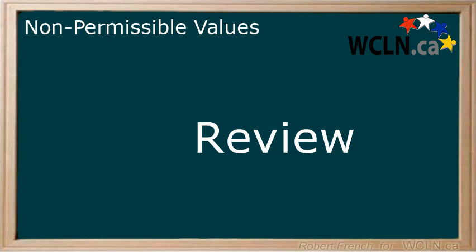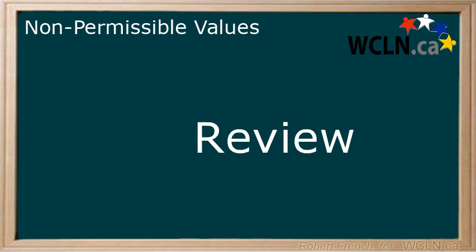In this lesson, you learned about non-permissible values. You cannot divide by 0, so any denominator with a variable in it most likely has a non-permissible value. These are values of x where the denominator equals 0, and they are written using the does not equal sign.